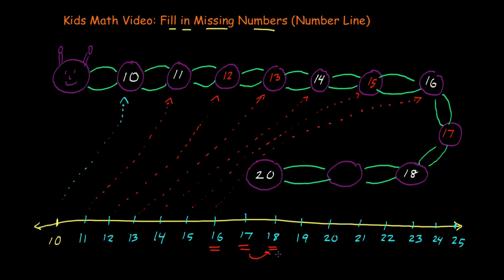And after 18, what comes next? 19. 18 plus 1 is 19, and we can see that right there — we've got 19. And then after 19, what comes next on the number line? It's 20. 20 comes next after 19. We already finished the problem, because the problem was just to fill in the missing numbers in this caterpillar, and we filled in all the missing numbers.